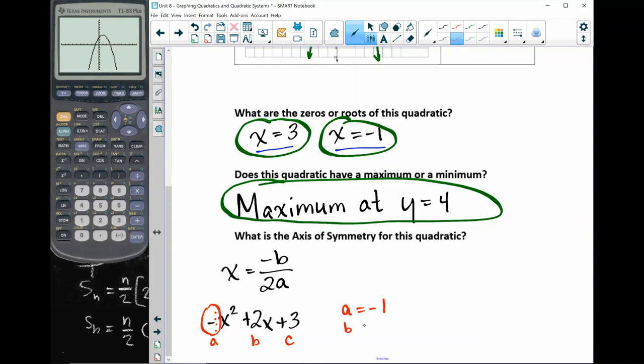My b is just 2, as you can see right here. And my c is 3, as you can see right here. So subbing these numbers into that equation, I get x equals negative 2, because 2 is my b, and I have to have this negative, over 2 times, and my a is negative 1.